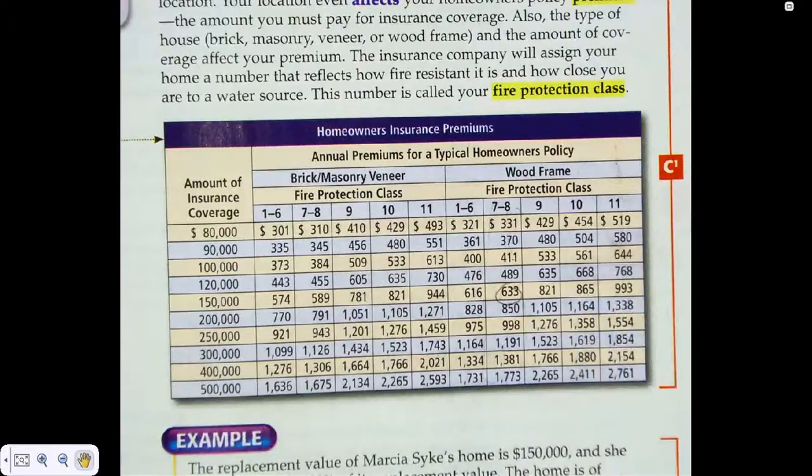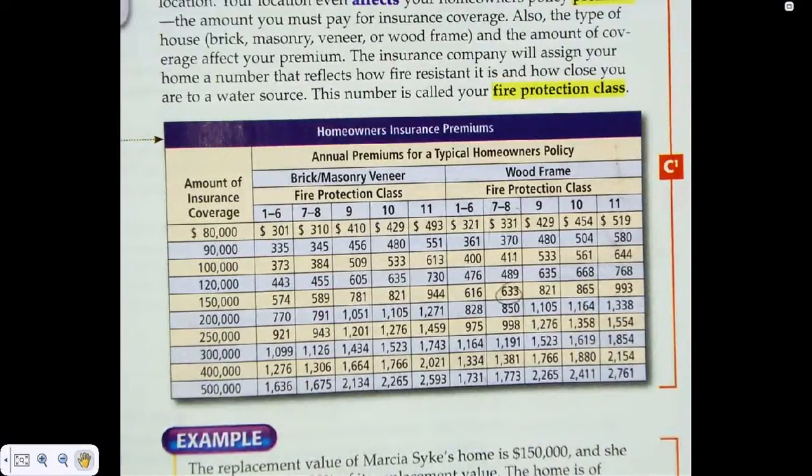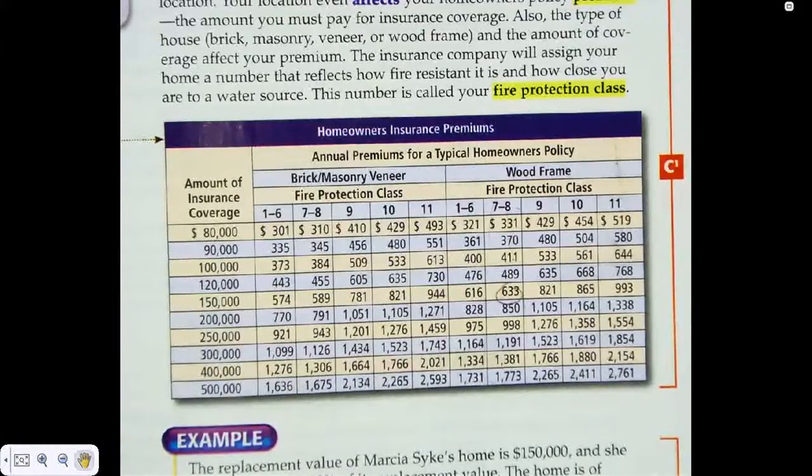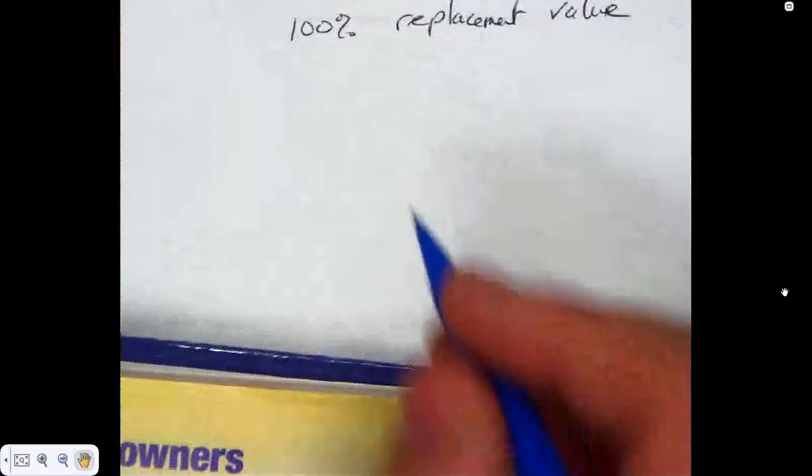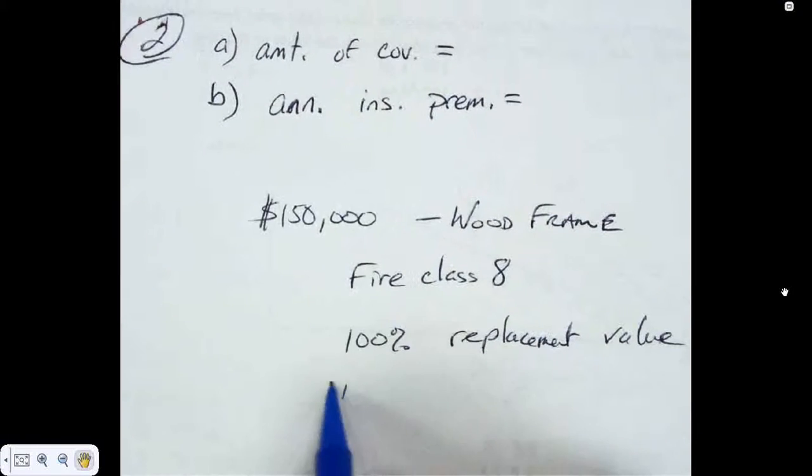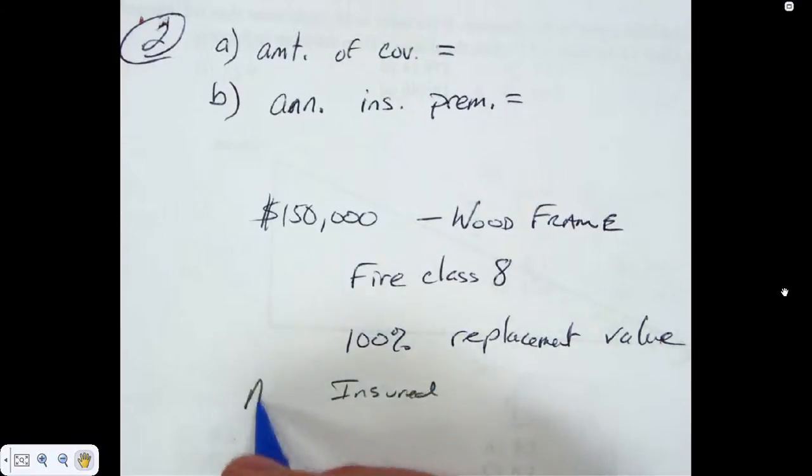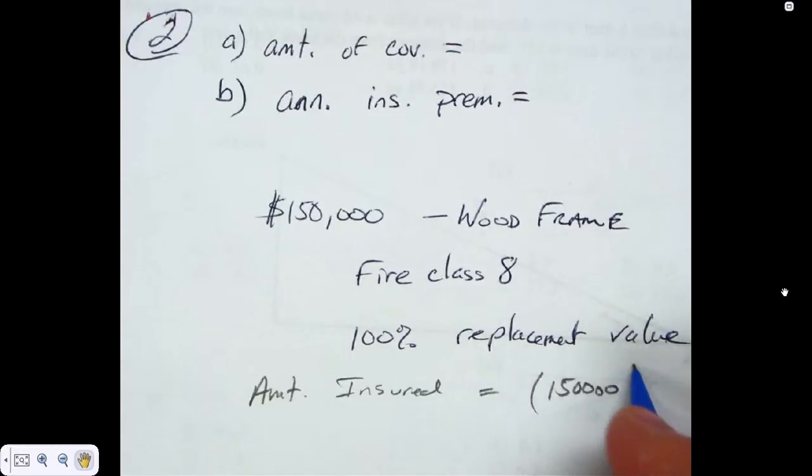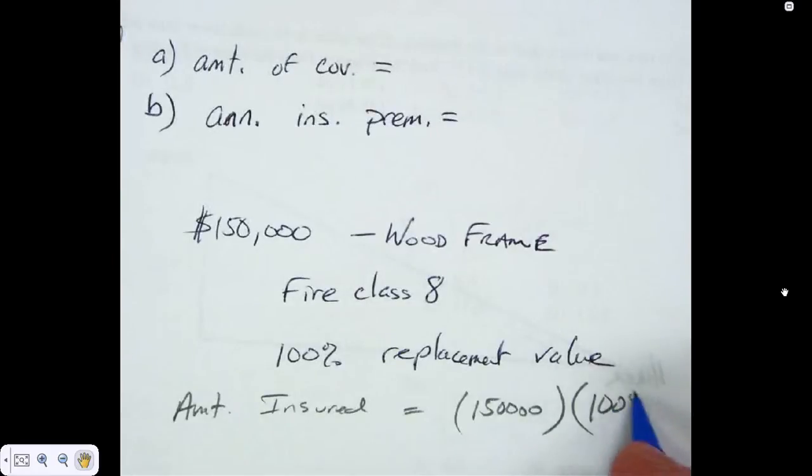Okay. Replacement value is equal to replacement value of home times insured value. Well, here on this one, how much is insured? What we do need to do is make sure we know how much is insured. Well, the value is $150,000, right? What are they insuring for? What percentage? 100%. So on this one, what we're going to look for in that column is $150,000, right?